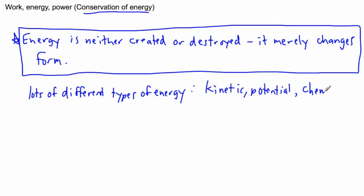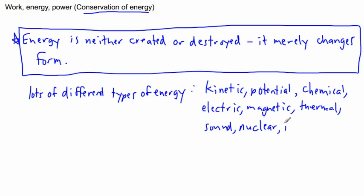So we have kinetic, we have potential, we have chemical, we have electric, we had magnetic, thermal, sound energy. I mean there's so many different types. There is nuclear, there's internal. Well, internal is sort of related to the thermal energy, but still. We have solar energy, we have all sorts.